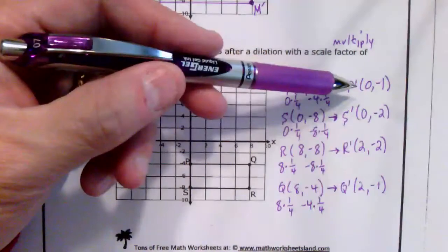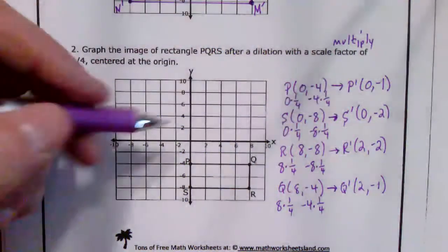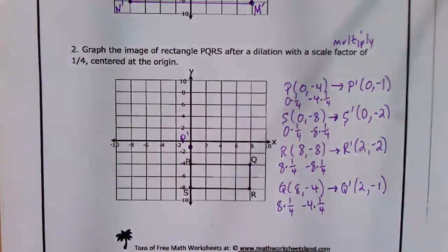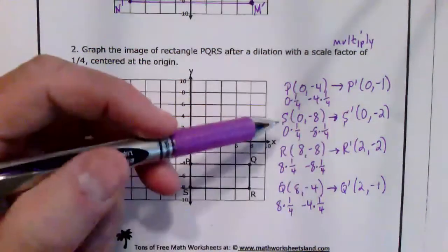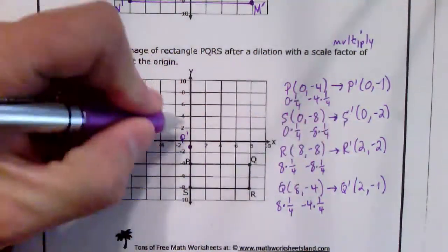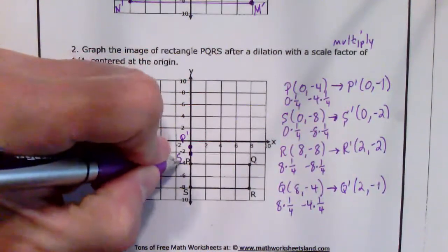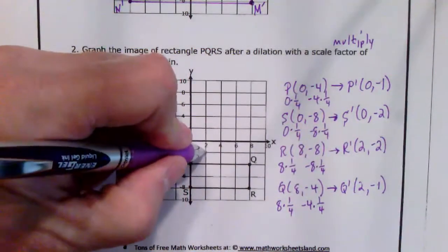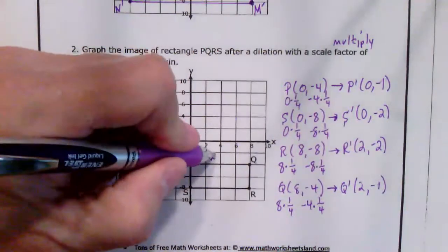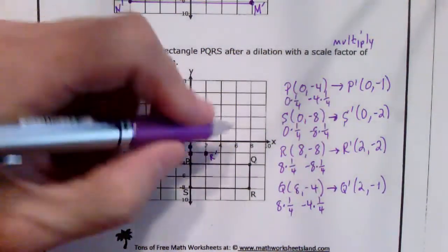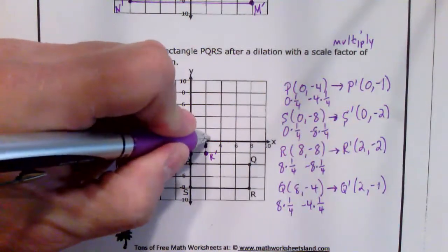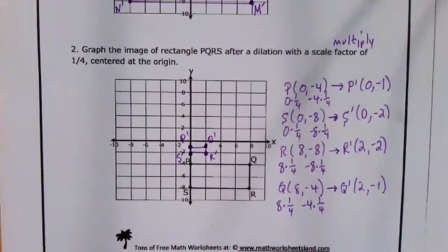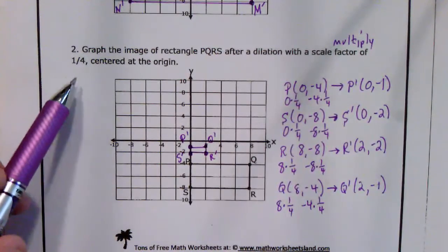Let's plot these new points. New P is at 0, negative 1 — right about here. New S is 0, negative 2 — right here. New R is 2, negative 2 — right here. You can see this is going to be much smaller. And new Q is 2, negative 1. You can see our new rectangle is much smaller — it is 1 fourth of the original size.